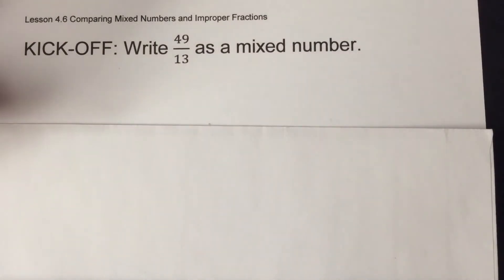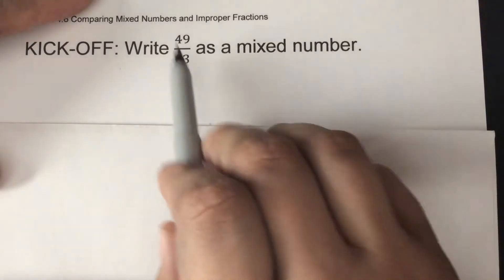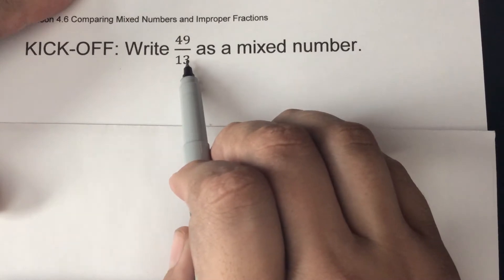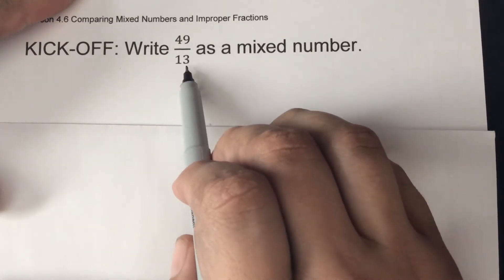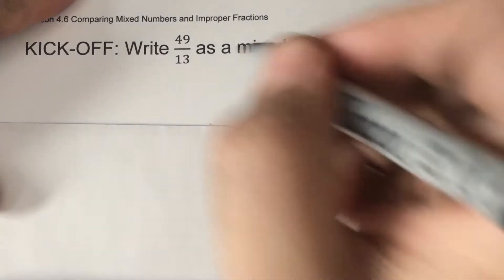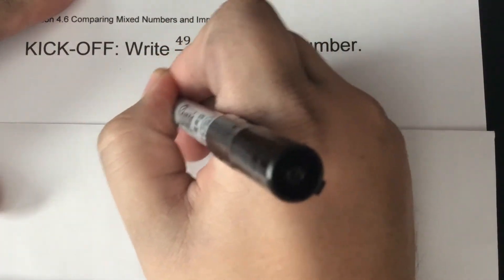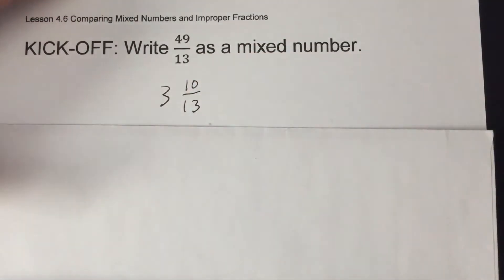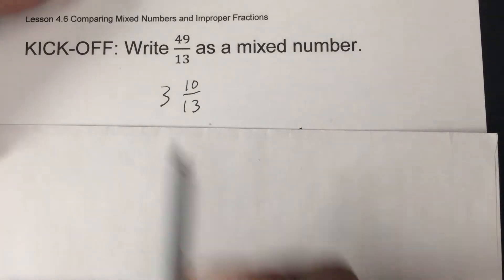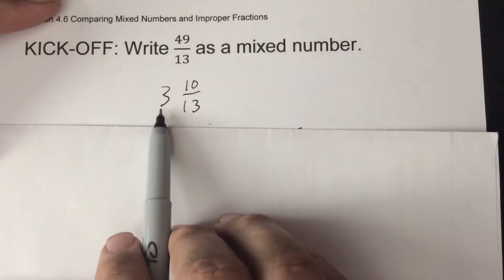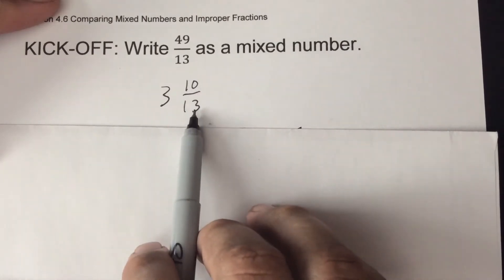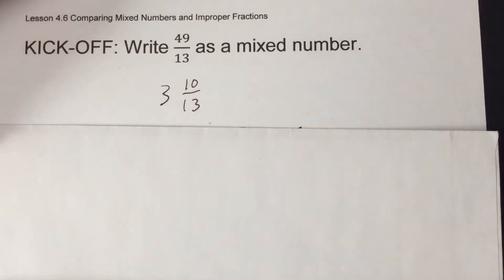First off, write 49 over 13 as a mixed number. You would take 49 divided by 13, which goes in three times. That's 39. So 49 minus 39 is 10. Ten is left over for a remainder, and so 3 and 10/13 would be your final answer. So top number divided by the bottom, the amount of times it goes in is the whole number. The remainder then goes above that denominator and that's your fractional part.